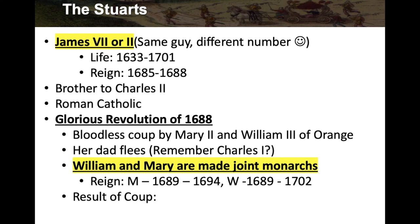Mary reigned from 1689 to 1694 together with William of Orange. She died in 1694, so William of Orange became the sole ruler of England from 1694 to 1702. This is the same William and Mary as William and Mary University — a very old research college, possibly the oldest in the United States, which they basically sponsored.